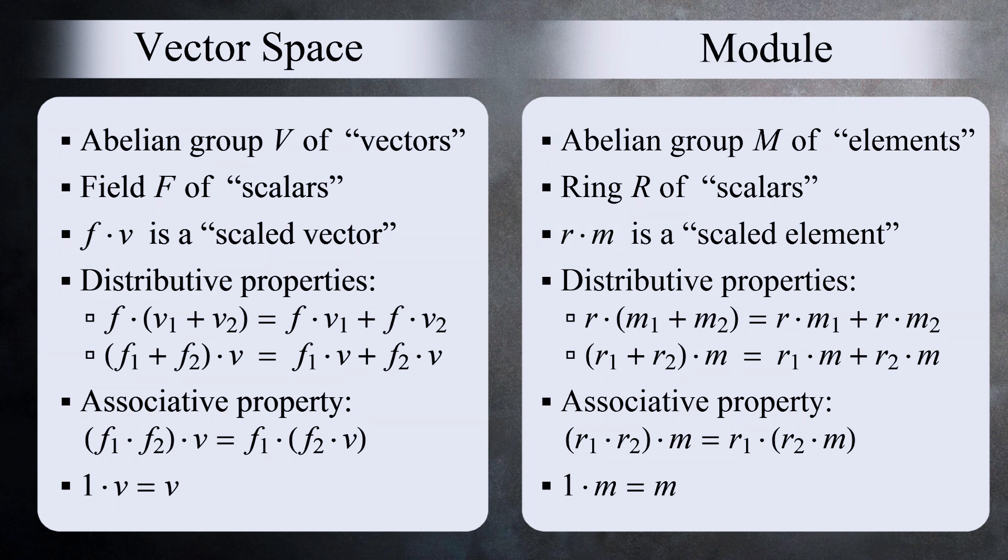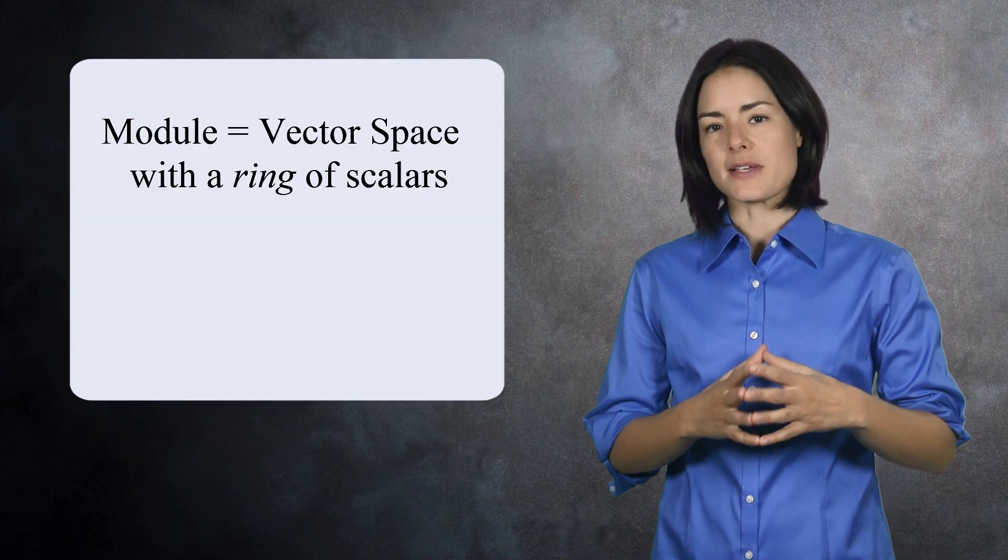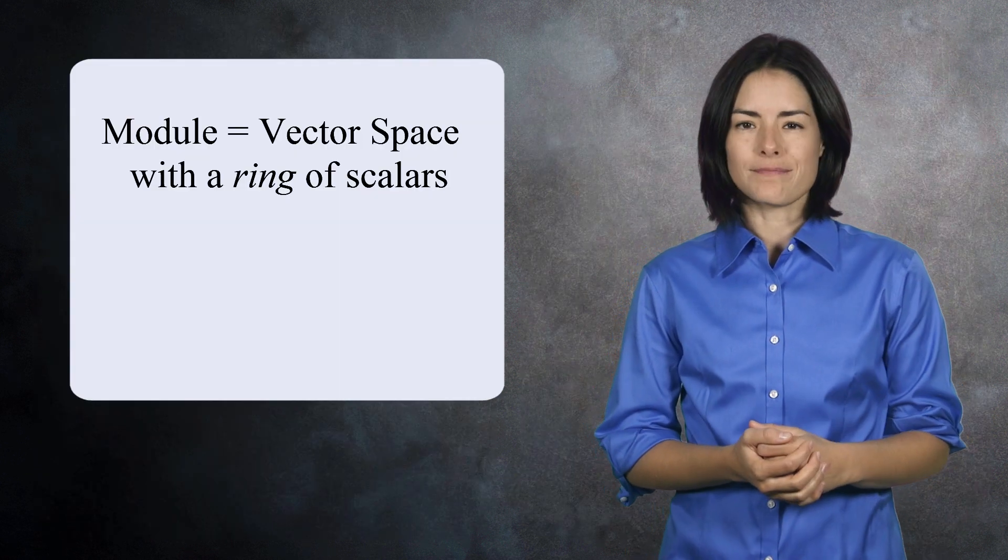Some rings have an identity element 1. If the ring of scalars has an identity, we also require that 1 times M equals M for any element M in the module. So a module is a vector space, except the scalars are a ring.